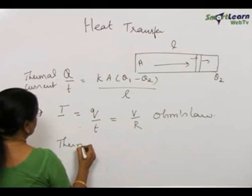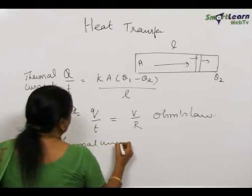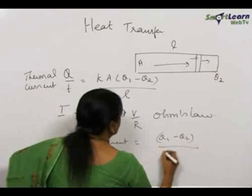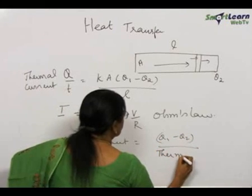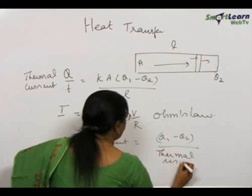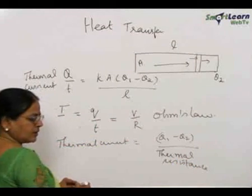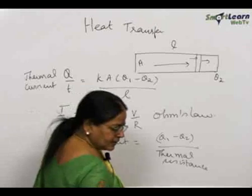Thermal current is equal to theta 1 minus theta 2 by thermal resistance. In the place of electric resistance, we have thermal resistance.